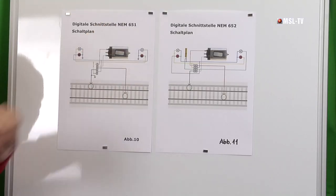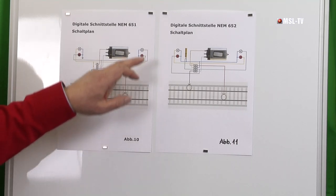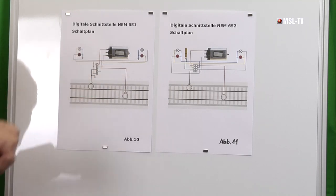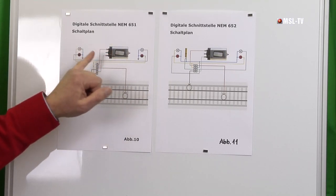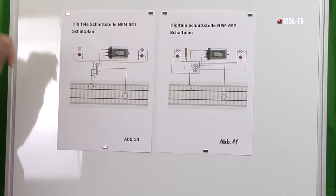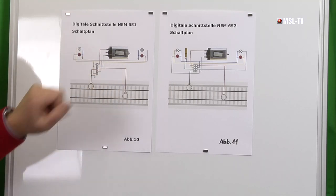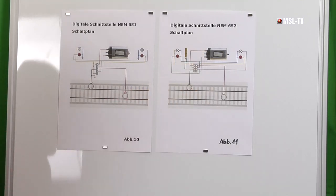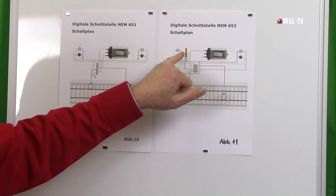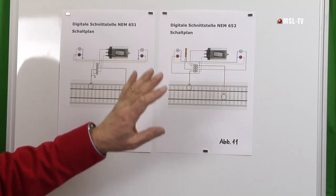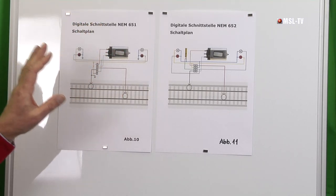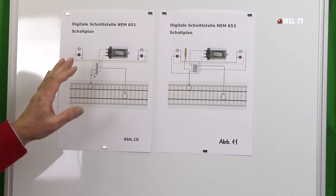Und zwar die Schnittstelle nach NEM 651 eingebettet in den Verdrahtungsplan der Lokomotive. Wer das selbst machen möchte, kann den Verdrahtungsplan hernehmen – alles ist drin und dran: wo kommt der Motor hin, wie sind die Beleuchtungen, Spitzenlicht und Rücklicht, welche Schiene kommt wohin. Genauso auch bei der 8-poligen Schnittstelle – hier ist auch der Rauchgenerator mit eingezeichnet. Für den Otto-Normalverbraucher uninteressant, aber als Hinweis für jene, die Hand anlegen wollen – zum Herunterladen als Abbildung 10 und 11.